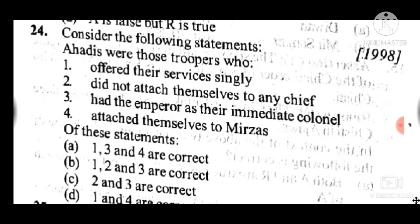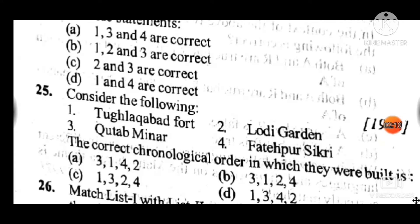Statements 1, 2 and 3 are correct: they offered their service singly, did not attach themselves to any chief, and had the Emperor as their immediate colonel. Question 25: Consider the following — the correct answer to question 25 is B: 3, 1, 2, 4. Qutub Minar was built first, then Tughlaqabad, then Lodi Garden, and last Fatehpur Sikri.